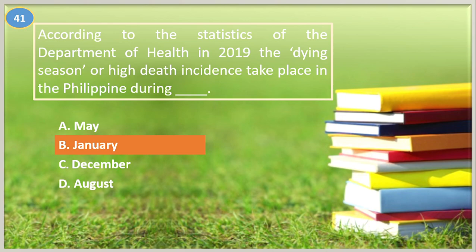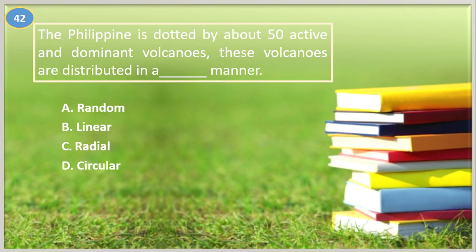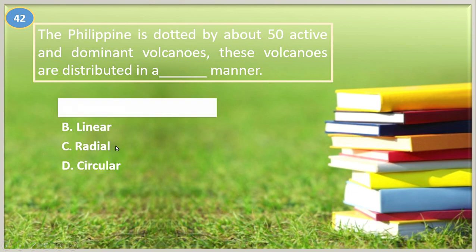In the 2019 survey, the month of January had 9.3% total deaths — the highest among other months. Number forty-two. The Philippines is dotted by about 50 active and dormant volcanoes. These volcanoes are distributed in a blank manner: A. Random, B. Linear, C. Radial, D. Circular. The answer is random.